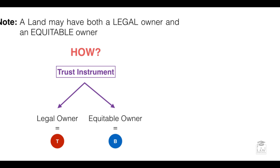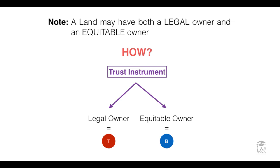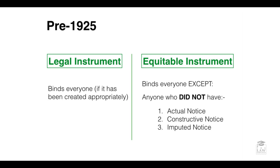These rights do not always exist solitarily. There are instances where there can be both a legal and an equitable owner in relation to land, and this happens by way of a trust instrument, where there is a legal owner and a separate equitable owner. We therefore need to consider land law in the context of both before 1925 and after the enactment of the Law of Property Act 1925.